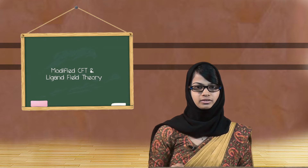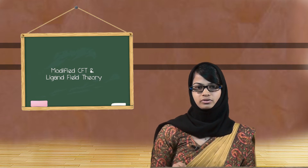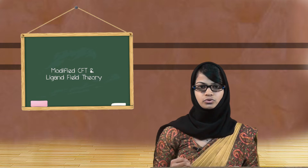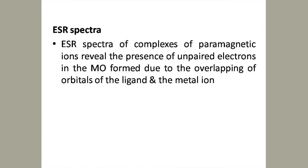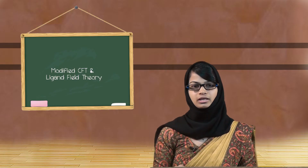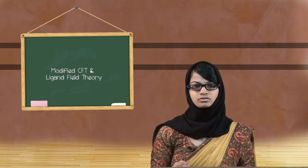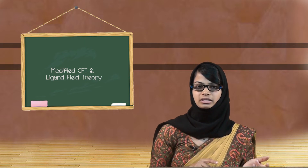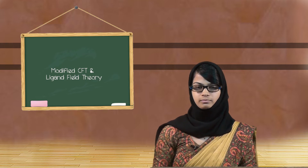The second evidence is from ESR spectra, or electron spin resonance spectra, which is used for the study of paramagnetic complexes. These studies show that there is a presence of unpaired electrons in the molecular orbital formed by the metal and the ligand. This presence of unpaired electrons in the MO is due to the overlapping of the atomic orbitals of the ligand and the metal, which again gives rise to covalent bonding.